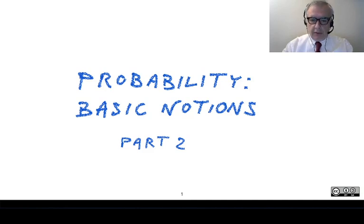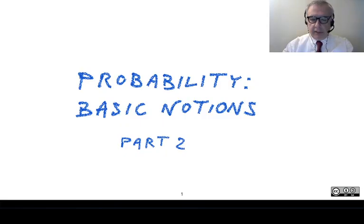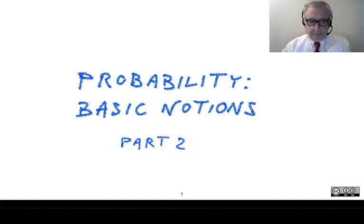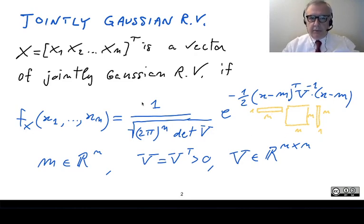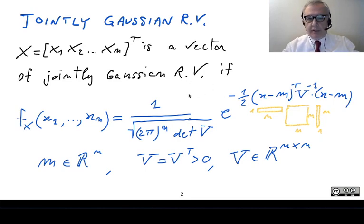We conclude our review of probability theory with some notions on multivariate Gaussian random variables. This is the last topic before we start reviewing some basic notions of statistics. Let us introduce jointly Gaussian random variables. We consider a vector of random variables x with n entries, and this vector is called a jointly Gaussian random vector if its probability density function has a specific expression.